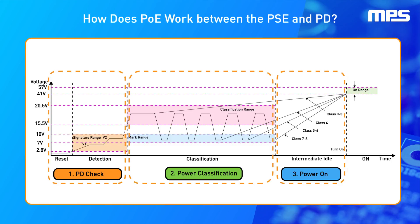Then the power is turned on. The power gradually increases to 54 volts, typical. Lastly, it is stabilized and monitored. The voltage is stabilized at 54 volts, and the max power is limited based on the classification results.